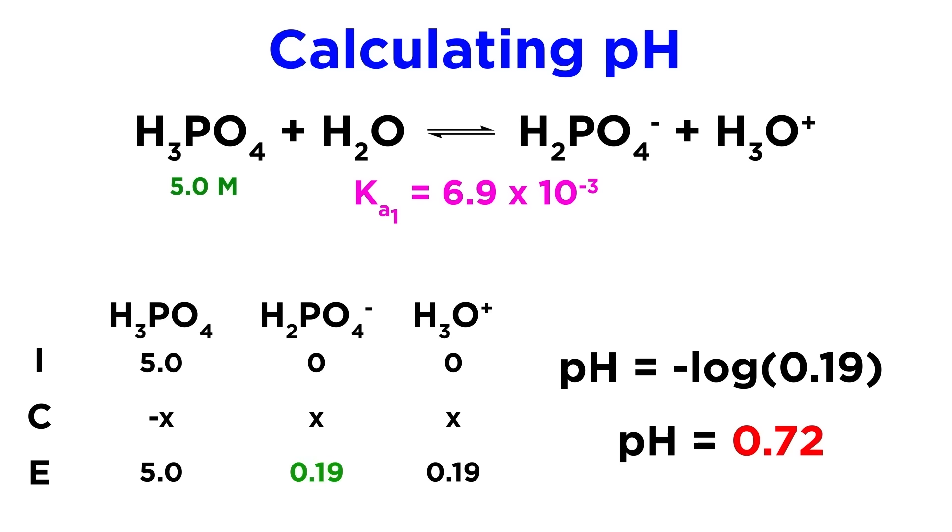Then we understand that the solution is also 0.19 molar in H2PO4-. Since that is the other product of the first deprotonation, and given that the Ka2 is on the order of 10 to the negative 8, we can see immediately that not enough hydronium will be generated to make a difference in terms of the pH.